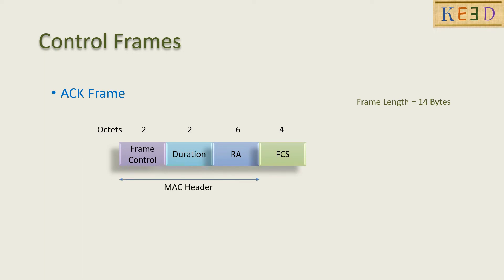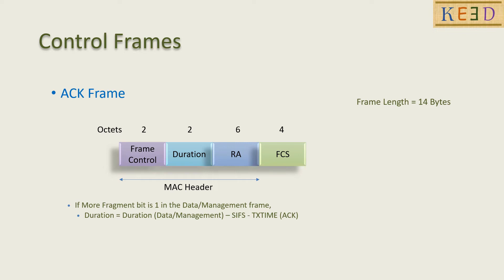ACK frame looks similar to the CTS frame. If the more fragment bit is 1 in the data or management frame, then the duration in ACK is calculated accordingly. If the more fragment bit is 0 in the data or management frame, then the duration in ACK is 0.